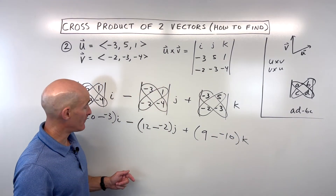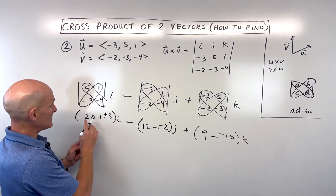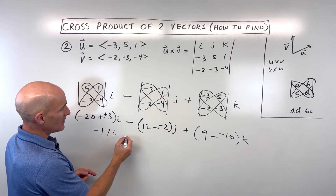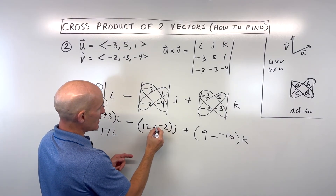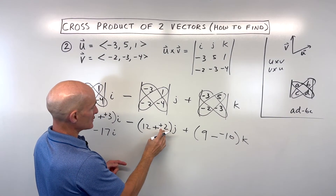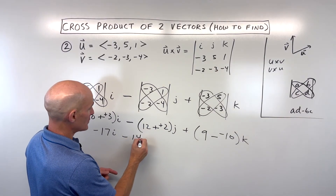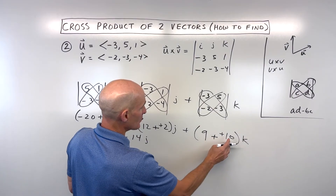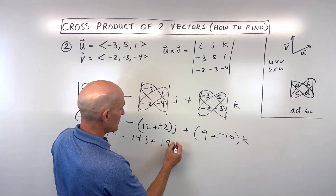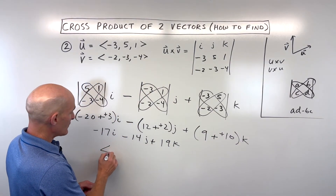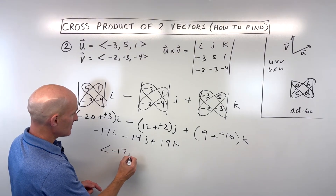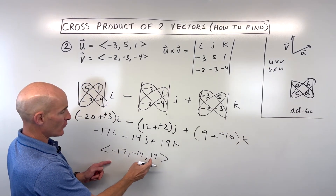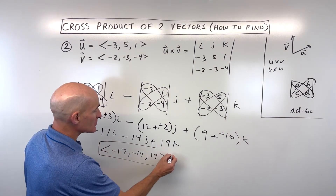Now let's simplify. When we subtract it's like adding the opposite: negative twenty plus three is negative seventeen i. Then we have subtractions like adding the opposite, we have fourteen, so that's going to be a negative fourteen j. And here subtraction is like adding the opposite, we have nineteen k. Or we can write this in component form: (-17, -14, 19). That's our cross product.